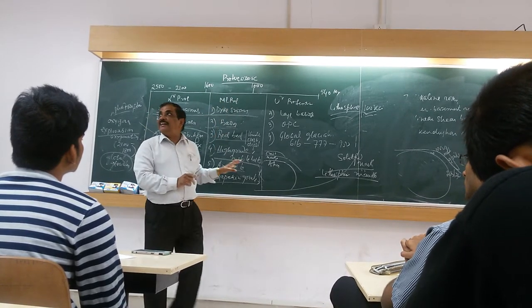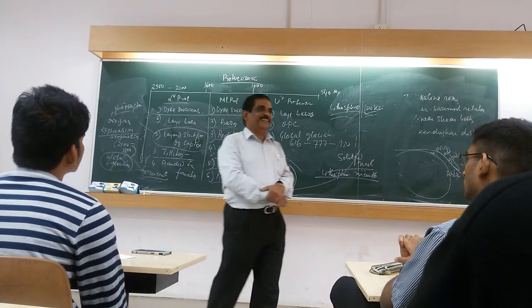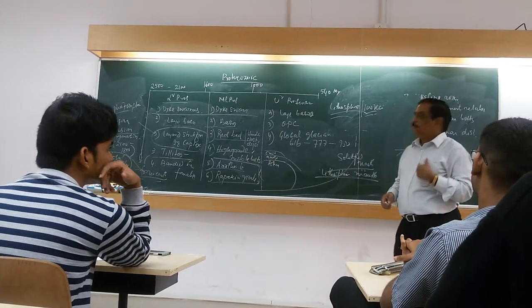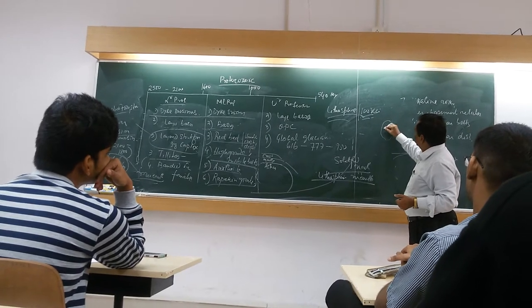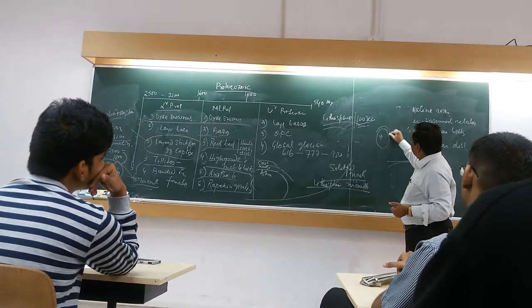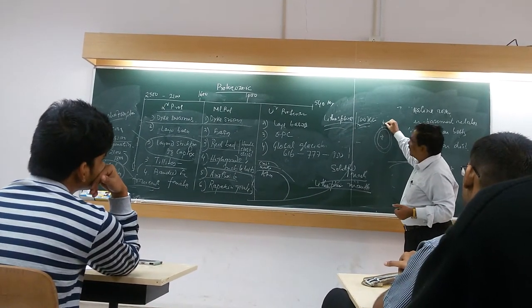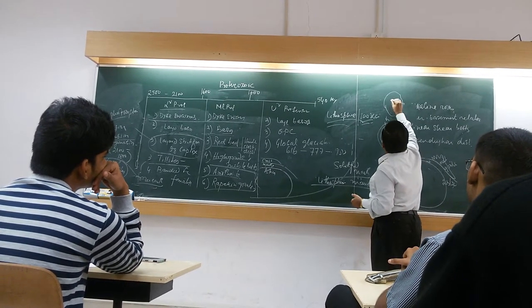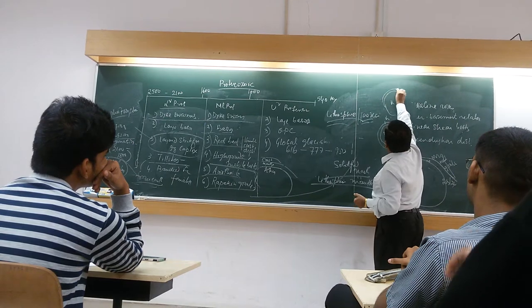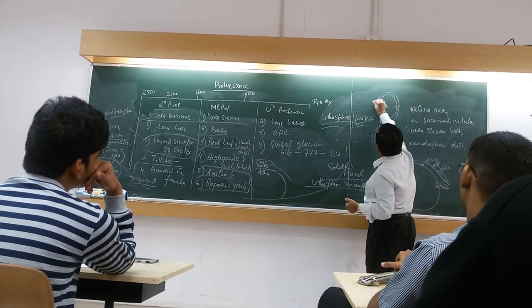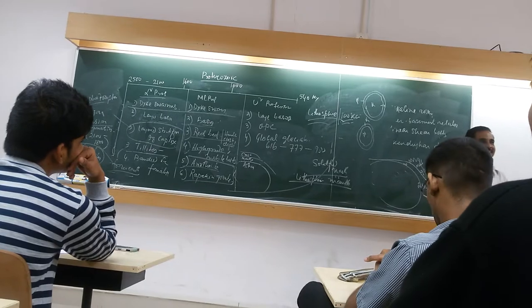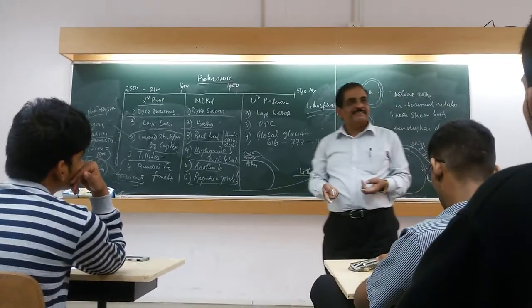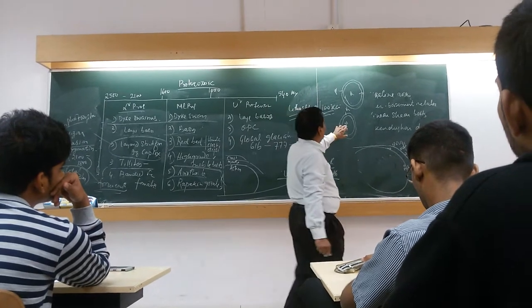What is rapakivi granite? Anybody can identify. Plagioclase — the ring surrounding the Earth. This is plagioclase surrounded by potassium. The ring is plagioclase. This is potassium, surrounded by plagioclase. So both things are there: rapakivi granites and anti-rapakivi granites. The difference is which one is surrounding the other.